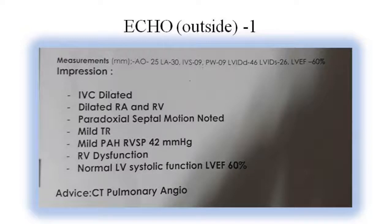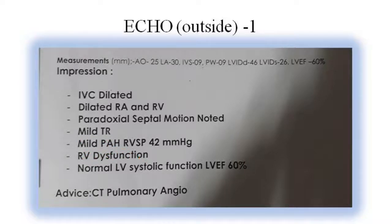This echo report had an impression of IVC dilatation, dilated RA and RV chambers, paradoxical septal motion, mild TR, mild pulmonary hypertension, RV dysfunction, and the left side was normal. When you look at this report, you think this young man could be having pulmonary embolism, and so he was advised to undergo a CT pulmonary angiogram.